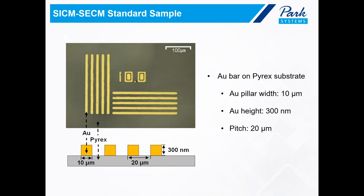The standard sample used here is a gold bar on a pyrex substrate. The gold bars are measured to be 10 µm in width and 300 nm in height, with a pitch width of 20 µm — meaning from the edge of the first pillar to the next pillar is 20 µm. So far, I've shown you the probe, the instrumentation, and the sample. Now let's look at the results.